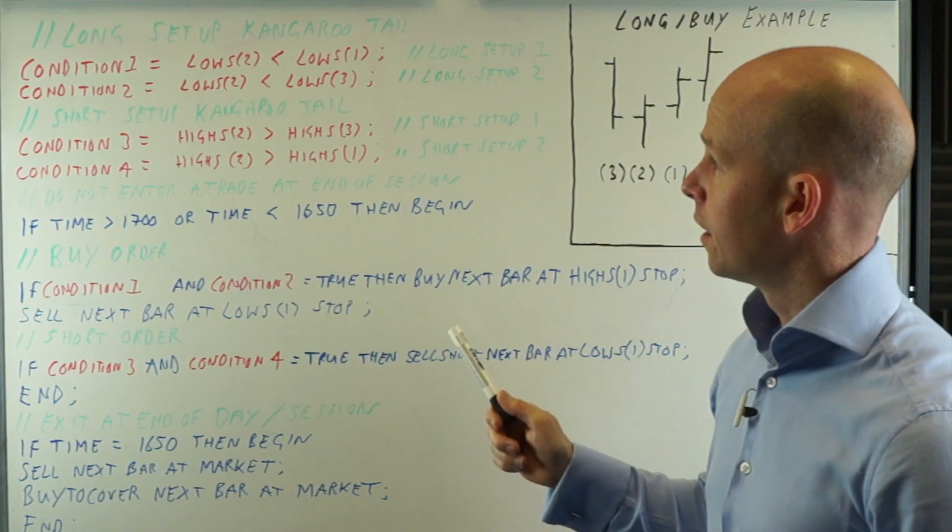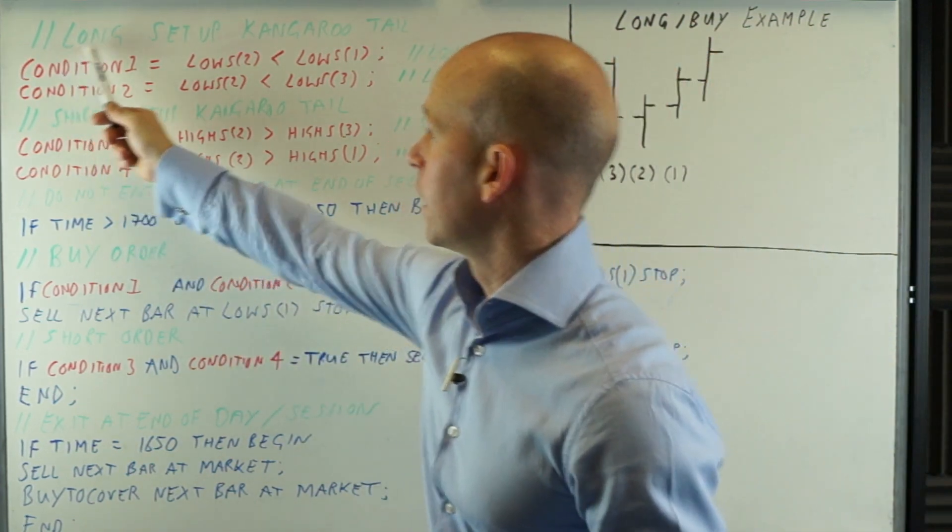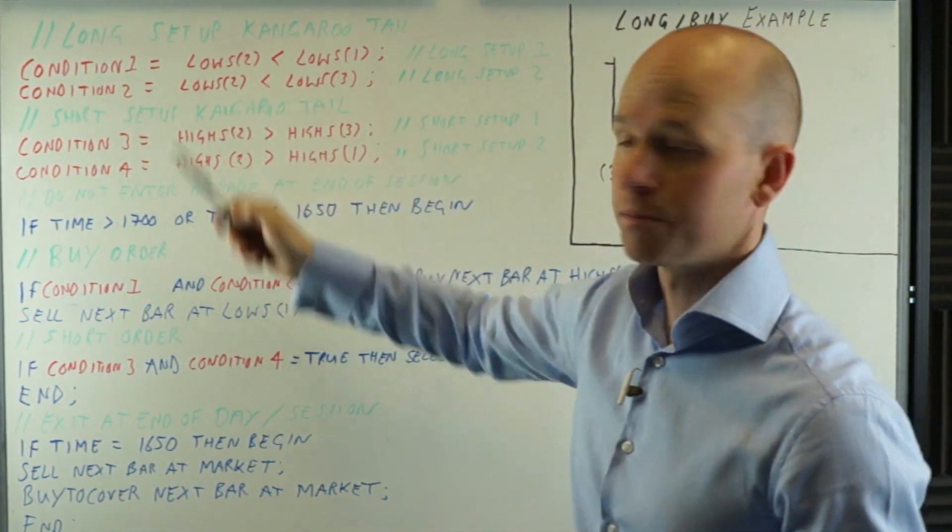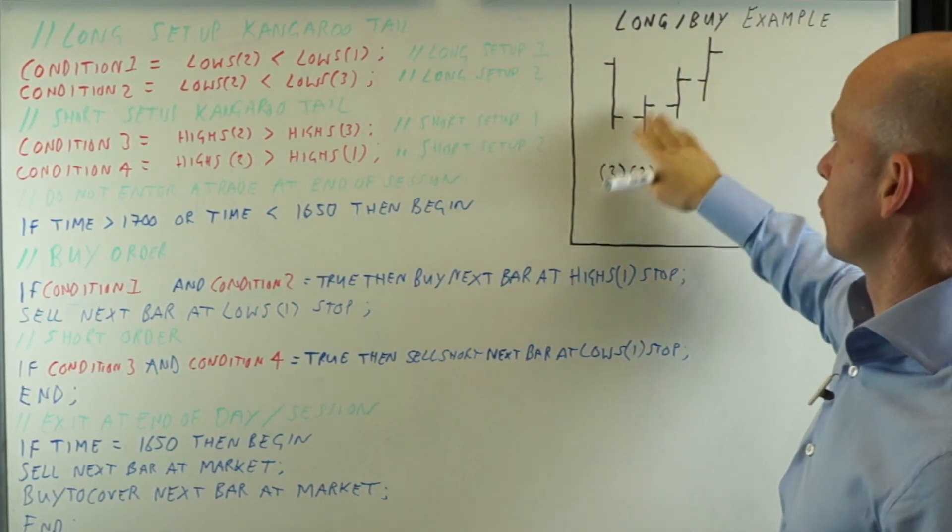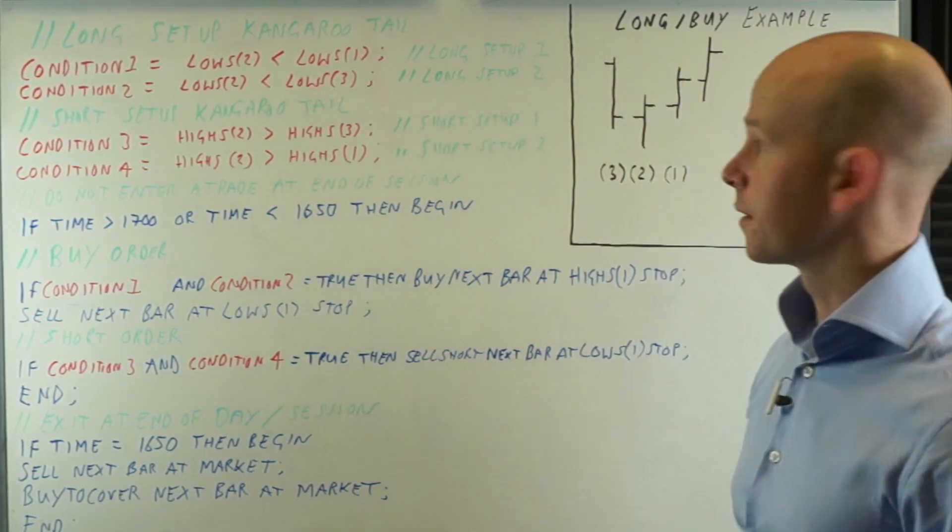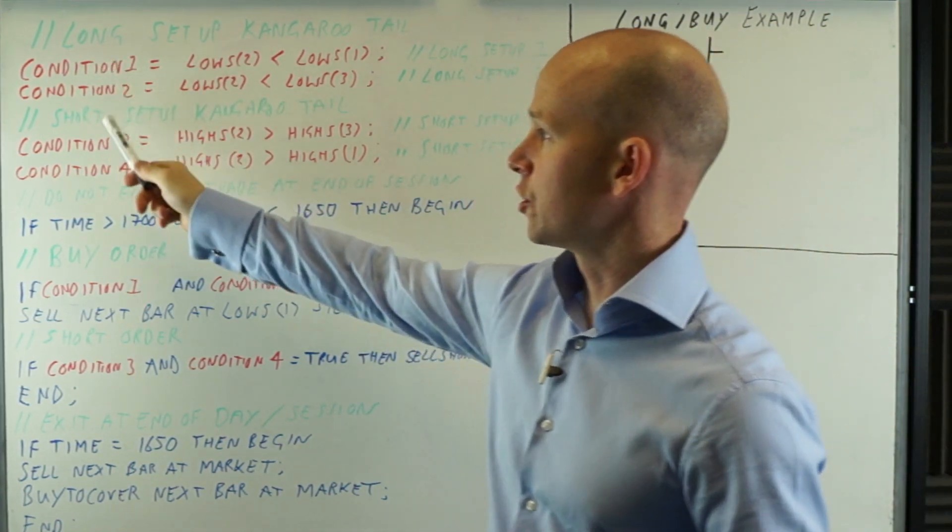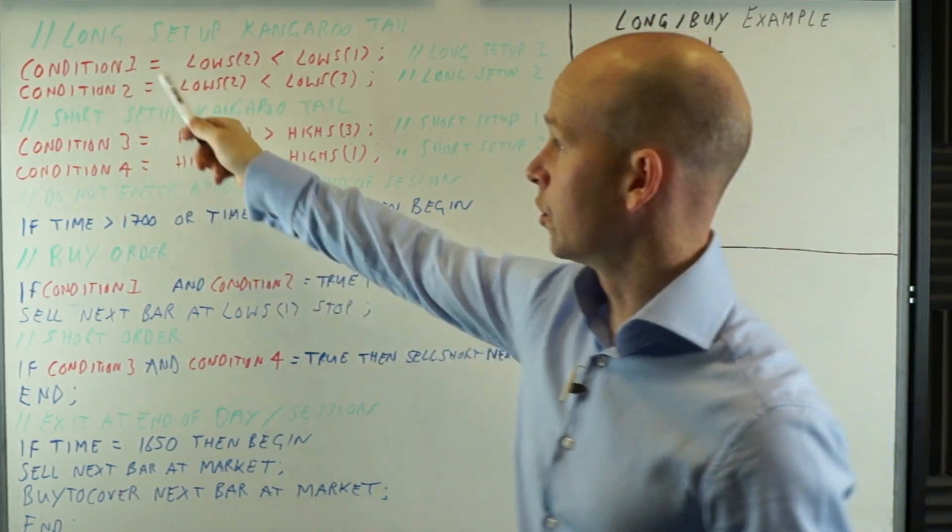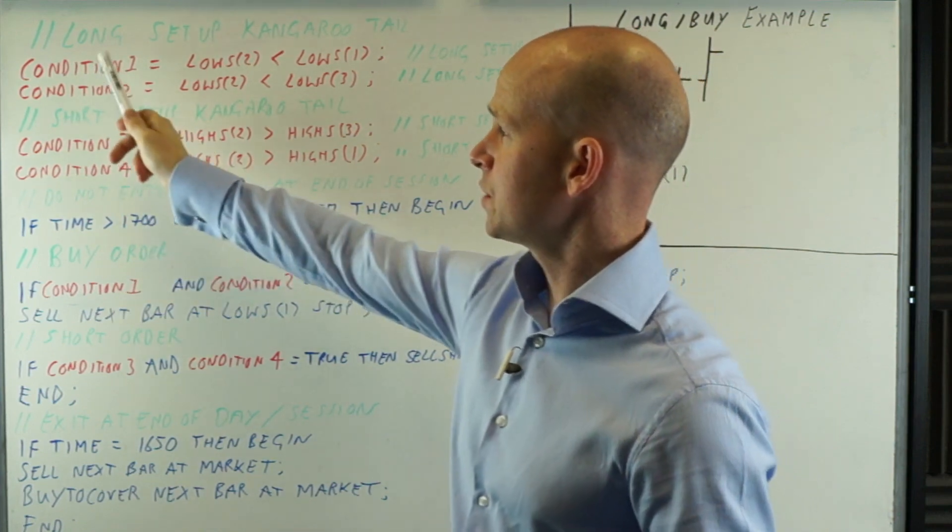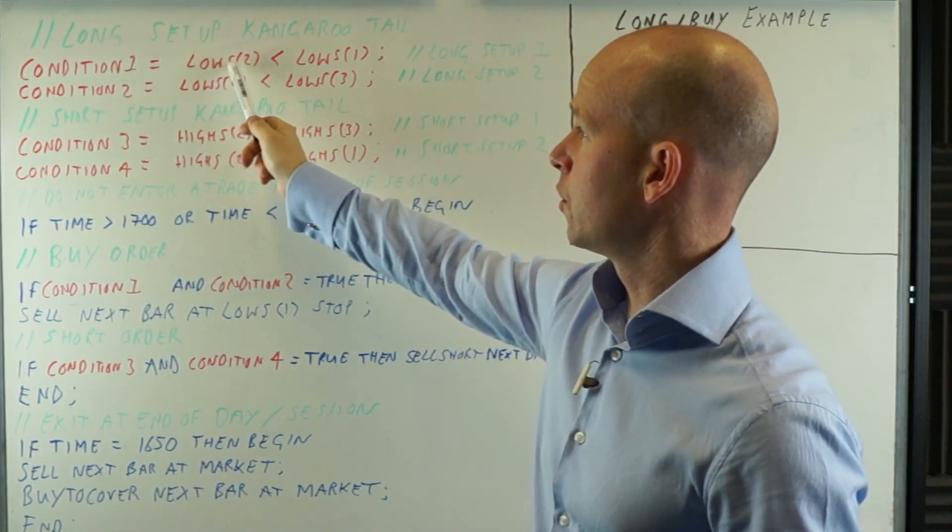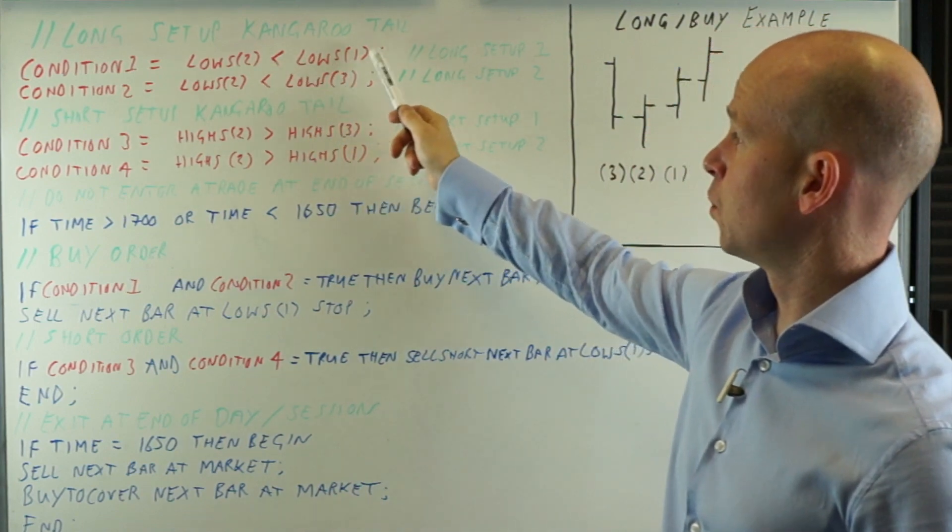So the first part is we're looking at a long setup for the kangaroo tail. So we want to see this sort of three bar setup. That's our setup. So I've given these conditions just names or numbers, so one and two. So condition one equals the lowS2 is less than the lowS1.